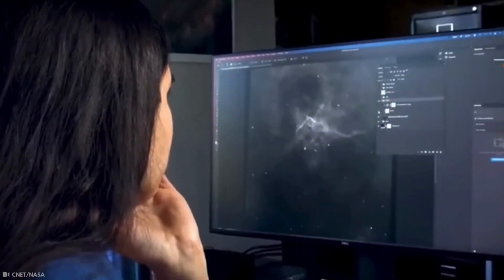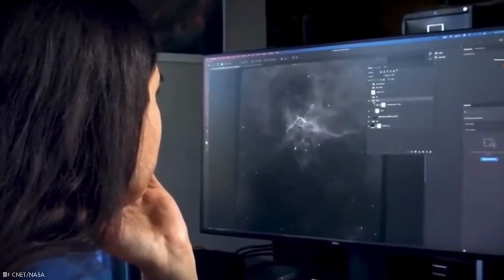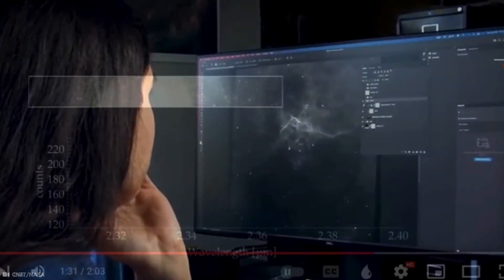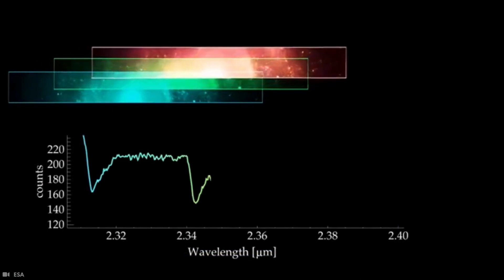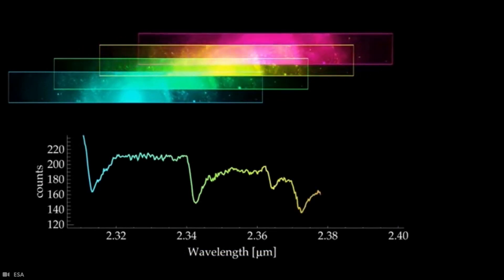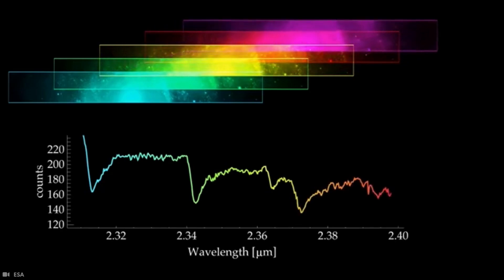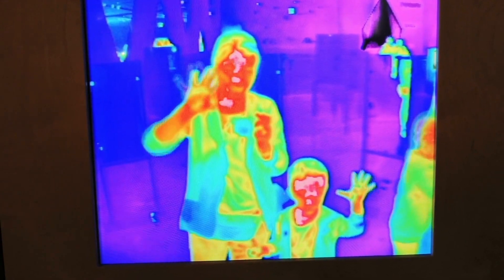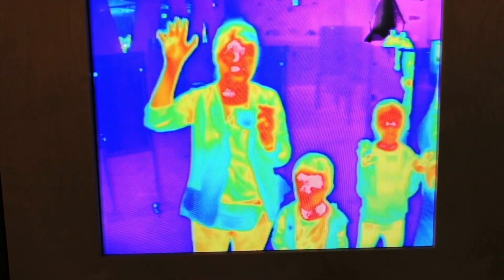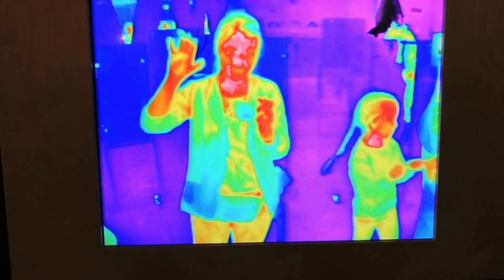Scientists need to make adjustments to turn Webb's raw data into something the human eye can appreciate. But in doing so, scientists preserve reality. Even if we were at the distance where the photos were taken, we would not be able to see these images captured by Webb as we see them now. Because our eyes cannot detect infrared light.